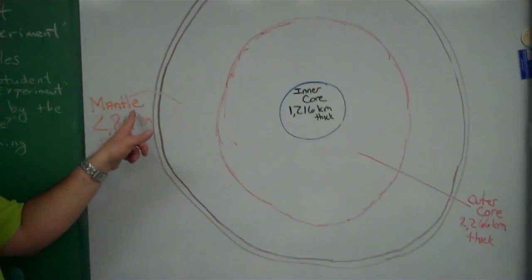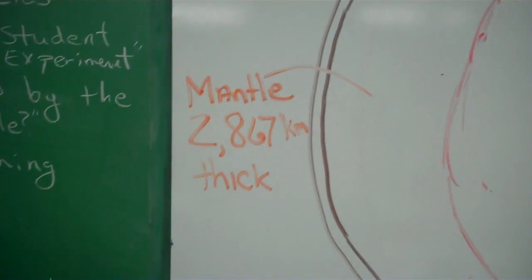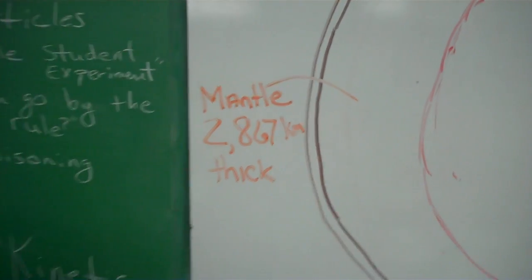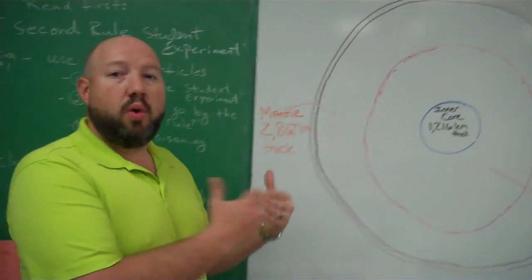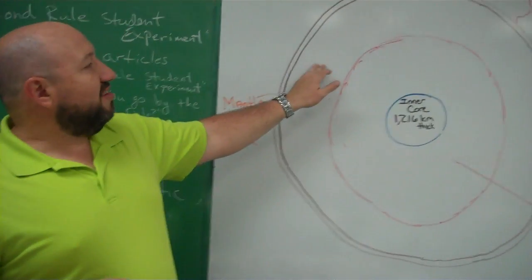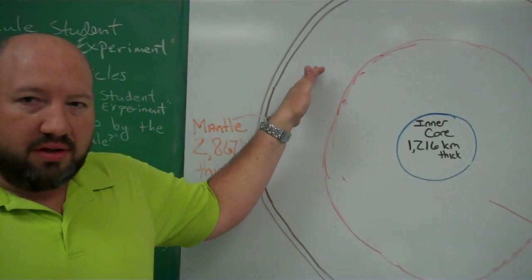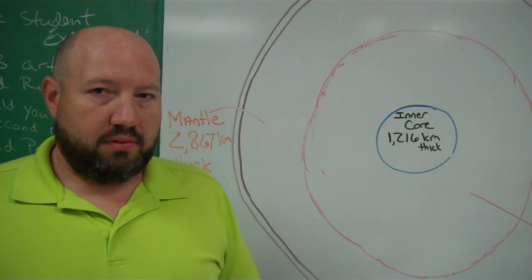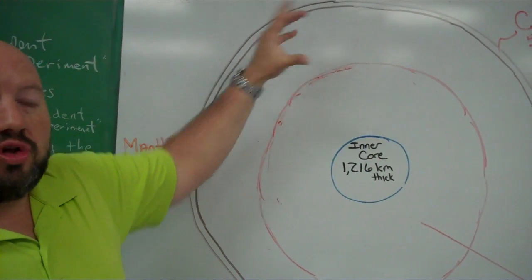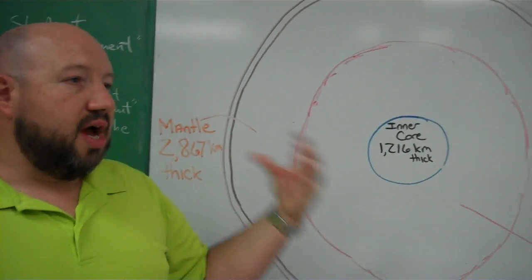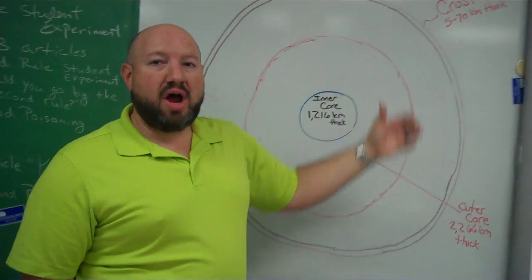The next layer is the mantle. It's approximately 2,867 kilometers thick. This is a semi-solid rock — like molten rock material. When you think of lava, that's what the mantle is composed of. As you get closer to the crust, some of that mantle has hardened, so it could be more solid rock than beneath it. But overall, it's a semi-solid molten rock material.